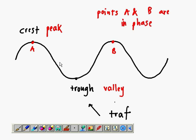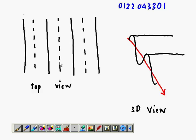These are in phase - in phase means they have the same position. Now the top view of the plane wave front looks like this. We also have a 3D view.